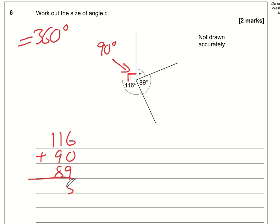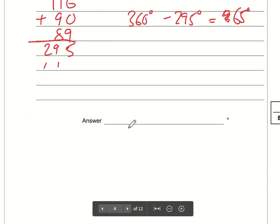Let's add these together and then subtract from 360. 9 plus 6 is 15, 5 carry 1, 10 18 19 carry 1, 1 plus 1 is 2. 360 degrees take away the 295 degrees that have been given equals 65 degrees. So x is 65 degrees.